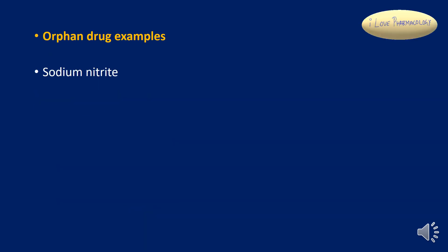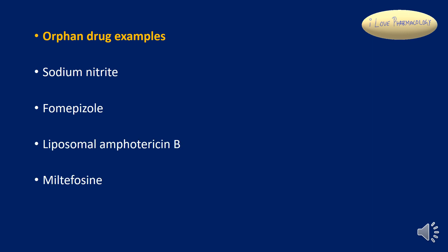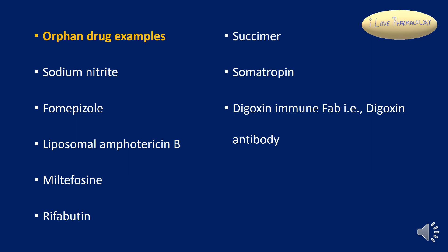Coming to the examples, we have sodium nitrite, formipizole, liposomal amphotericin B, miltefosine, rifabutin, succimer, somatropin, digoxin antibody, and liothyronine that is T3, etc. There are many more orphan drugs; these are the important ones.